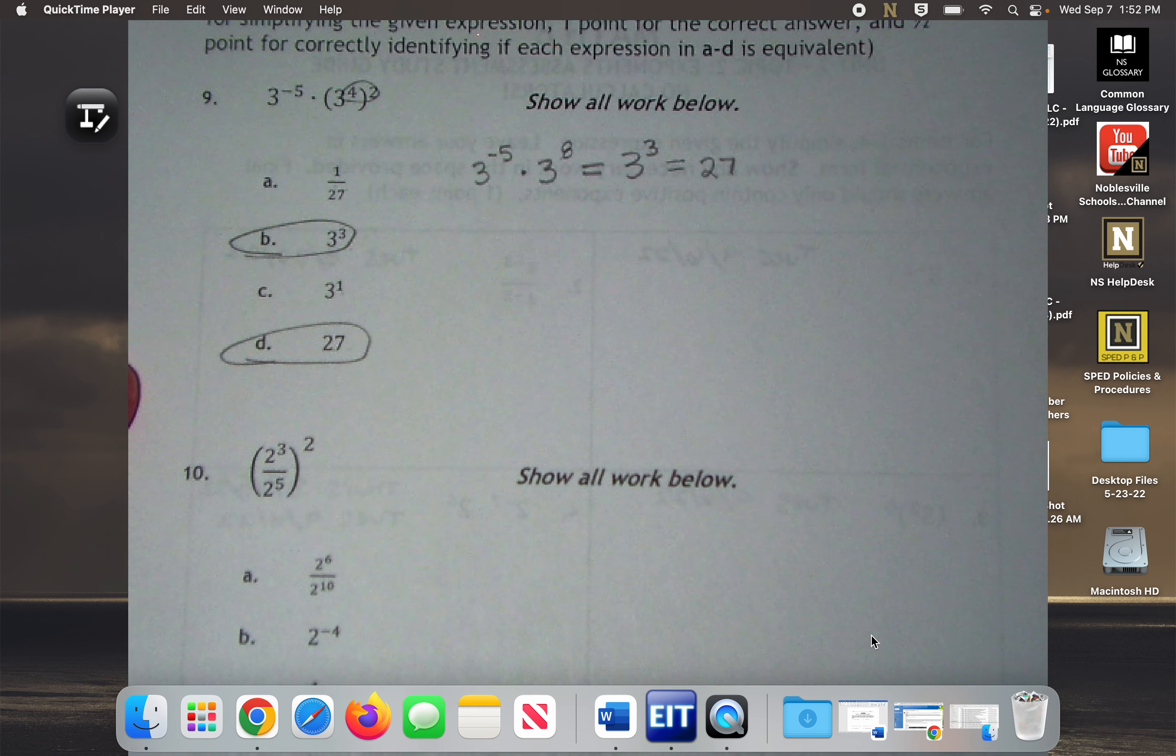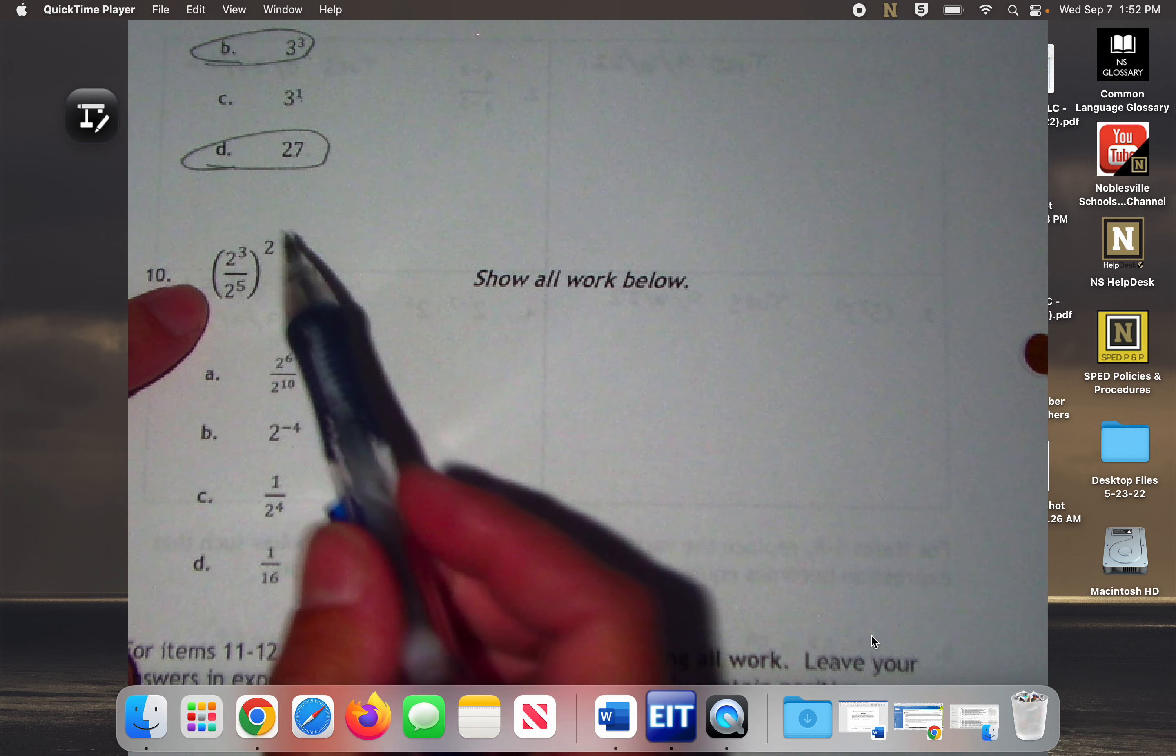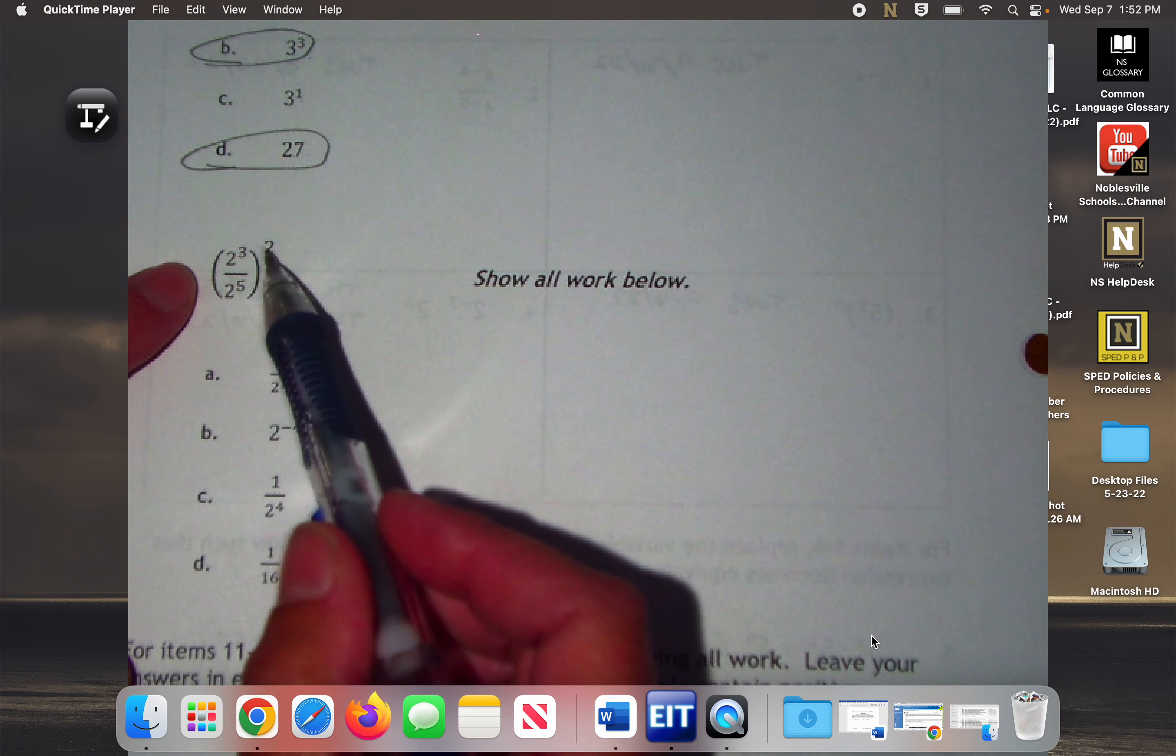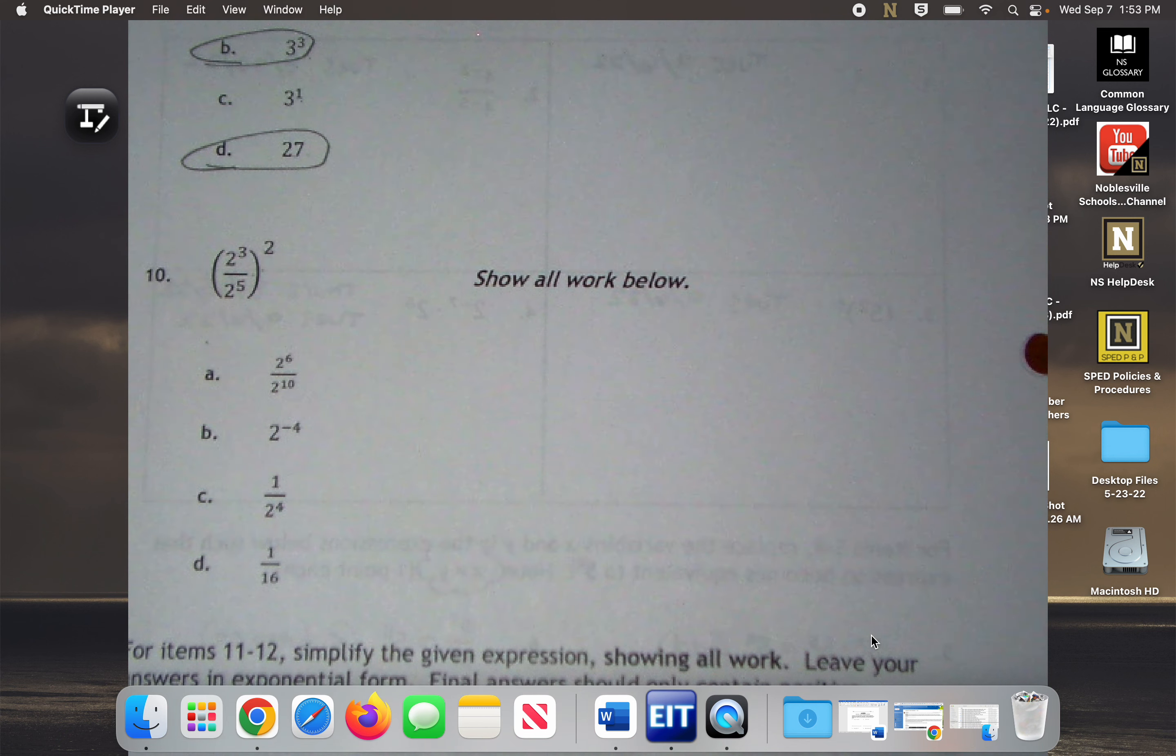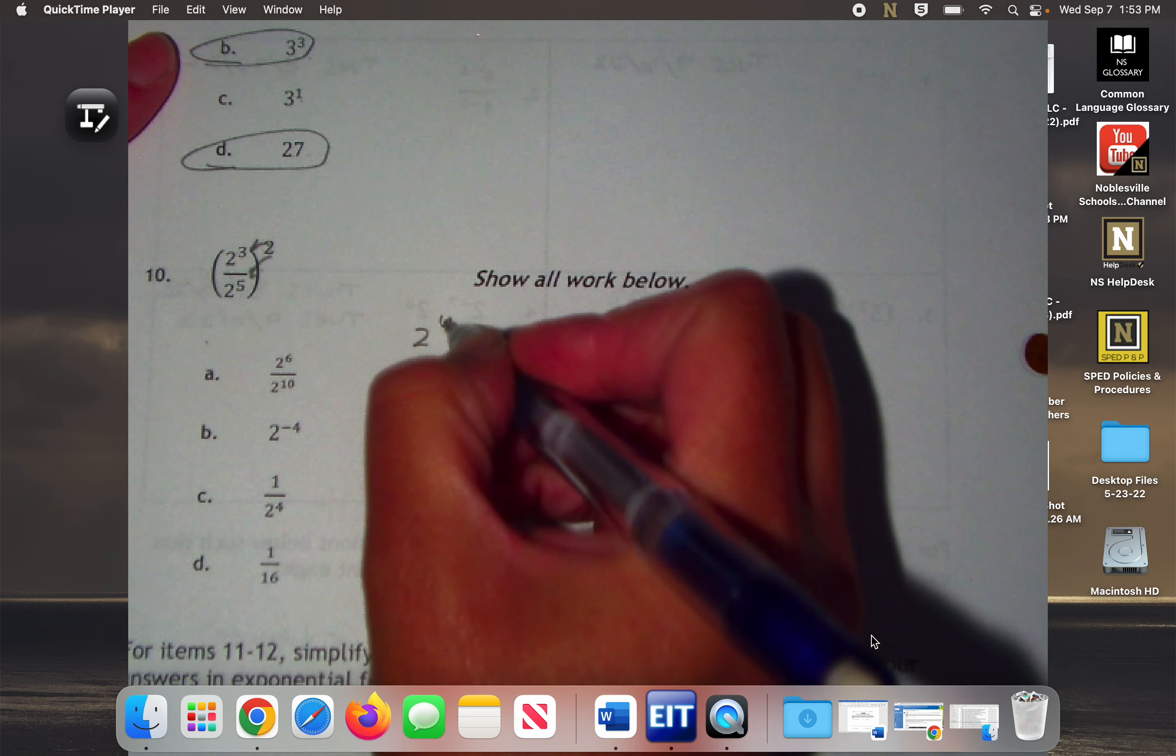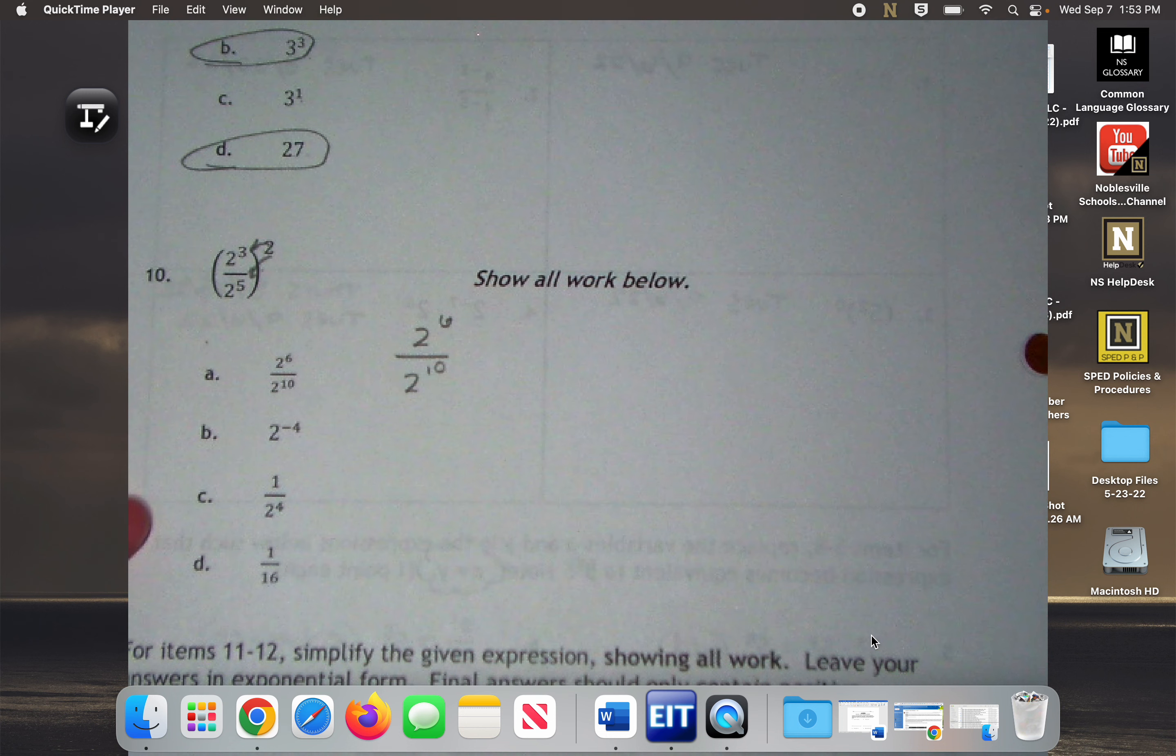Let's look at number 10. We have a few minutes. We can do this. We've got power of a quotient. What am I going to do with this 2, with this 3 and 5? What am I going to do here? I'm going to distribute these. So I'm going to get 2 to the 6th over 2 to the 10th. Do we see that in any of these four choices? Yes. Sure do. But I'm not done. I can still do more.